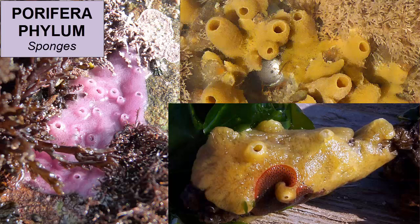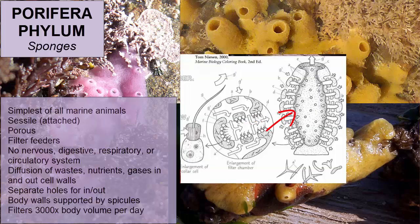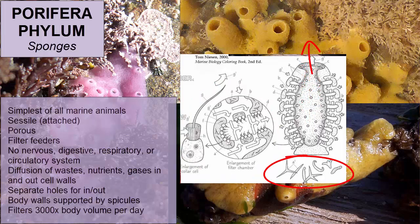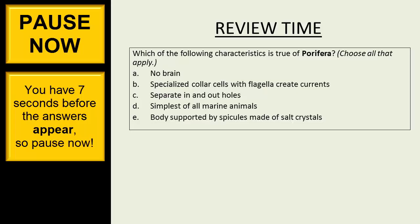The Porifera phylum consists of all sponges. They are the simplest of all marine animals — sessile, porous filter feeders with no nervous, digestive, respiratory, or circulatory systems. Diffusion of wastes, nutrients, and gases occurs through cell walls. There are separate holes for water in and out; water is drawn in by beating flagellated cells. Body walls are supported by spicules made of glass or calcium carbonate. Sponges can filter 3,000 times their body volume each day.